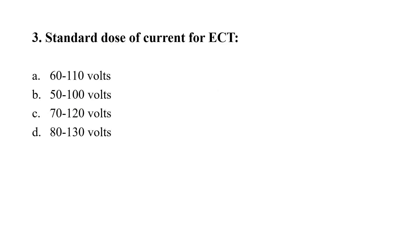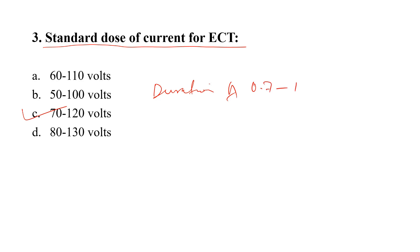Question number three: What is the standard dose of current for ECT? Option A: 60 to 110 volts. Option B: 50 to 100 volts. Option C: 70 to 120 volts. Option D: 80 to 130 volts. The correct option is option C — 70 to 120 volts, given for a duration of 0.7 to 1.5 seconds.